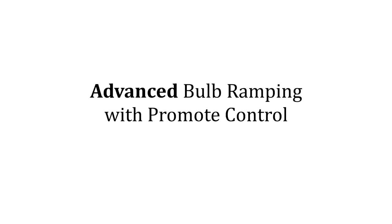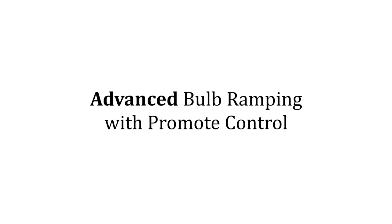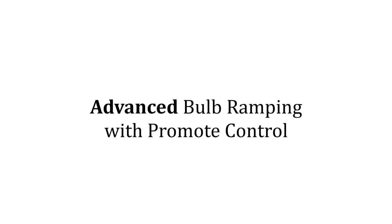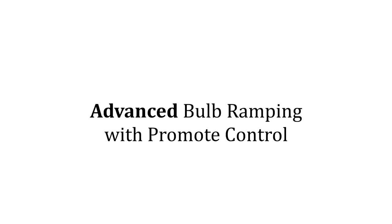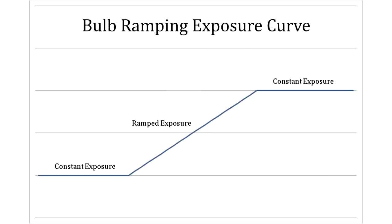This is Promote Systems and today we're talking about how to do advanced bulb ramping with the Promote Control. Bulb ramping is a technique useful when you want to take a time-lapse video of a sunset or other conditions with smoothly changing light and need to vary your exposures in very small increments.